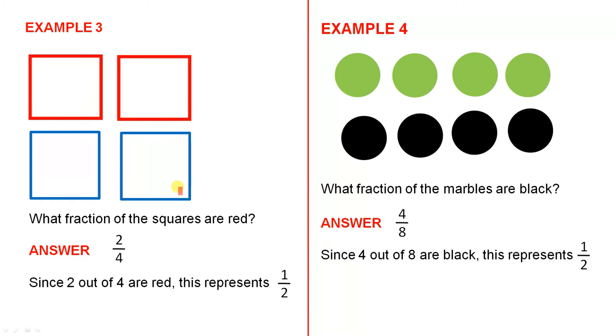Example 3. What fraction of the squares are red? Well, 2 squares are red out of a total of 4, so the fraction is 2 over 4.